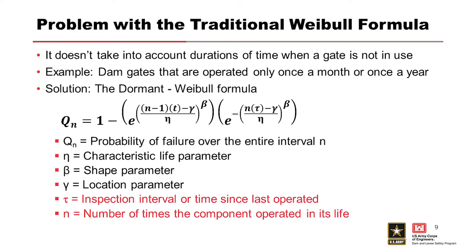A problem with the traditional Weibull formula is that for a lot of our project, particularly flood control dams, the machinery is not used on a regular basis. We like to see the machinery exercised at least monthly. Sometimes that's not possible. Some I've seen where quarterly is pretty common or even annually.